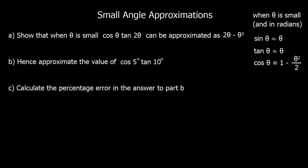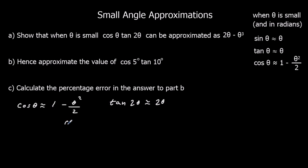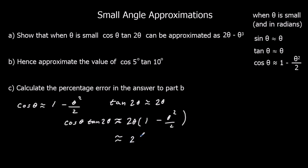Show that when theta is small, cos theta times tan 2 theta can be approximated as 2 theta minus theta cubed. So cos theta, when theta is small, is approximately 1 minus theta squared over 2. And tan 2 theta, when theta is small, is approximately 2 theta. Multiplying these together: cos theta times tan 2 theta is approximately 2 theta times (1 minus theta squared over 2), which expands to give 2 theta minus theta cubed.